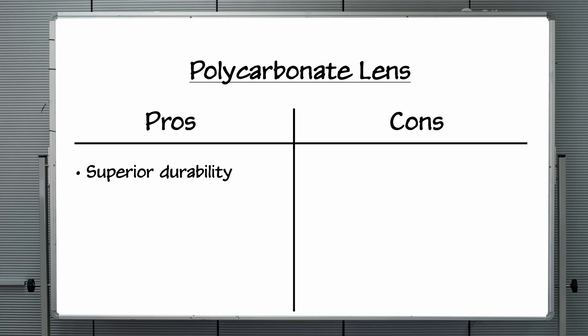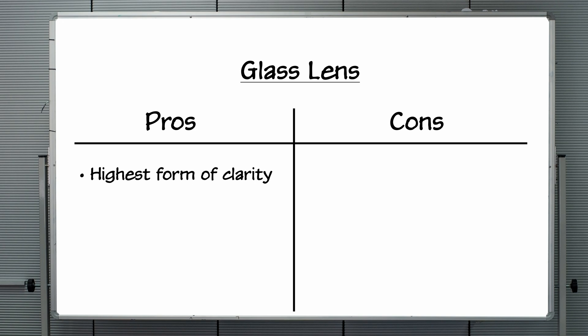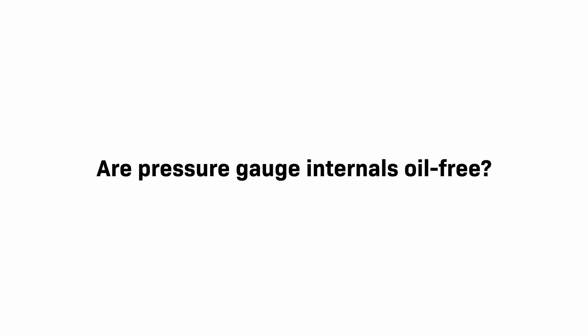Polycarbonate provides superior durability, resistance to impact, and tolerance to temperature fluctuations. Glass provides the highest clarity and resistance to chemicals, but may be more prone to damage. Are pressure gauge internals oil-free?